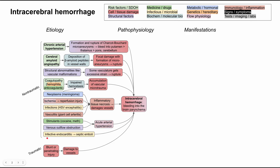Lastly among etiologies, infective endocarditis can throw off septic emboli into the vessels leading to the brain and cause bleeding into the brain parenchyma. Those are the etiologies — many non-traumatic and, of course, traumatic injuries can also cause bleeding into the brain. Now let's talk about the manifestations.